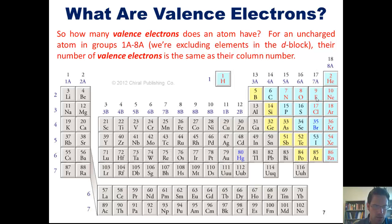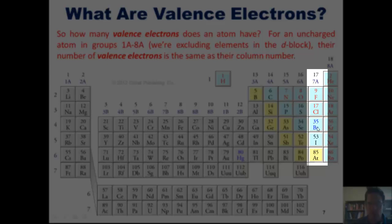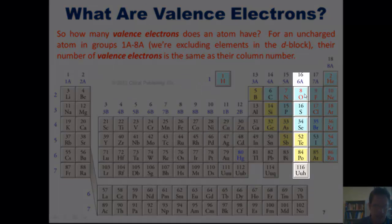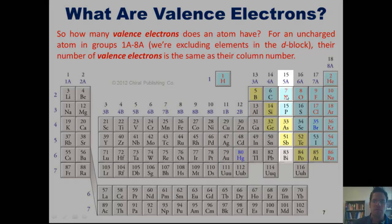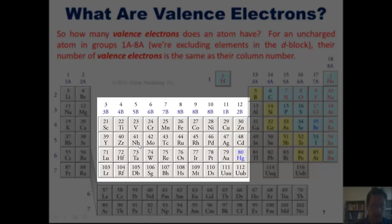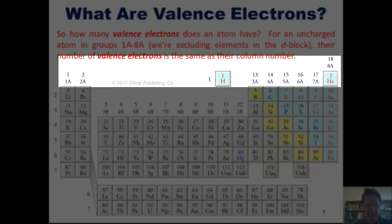Now, what about elements in lower rows? Same thing. Every single element in column 7A, for example, has seven valence electrons, spanning all the way down from fluorine to chlorine to bromine to iodine to astatine. In an analogous fashion, every single element in column 6A has six valence electrons, every one in 5A has five valence electrons, and so forth. Now, what about the elements in the D block? Well, for those elements, things are a little bit more complicated. I'm going to ignore them right now and just tell you this. For atoms in columns 1A through 8A, the column number is the same as that atom's number of valence electrons, if you have a neutral, uncharged atom.